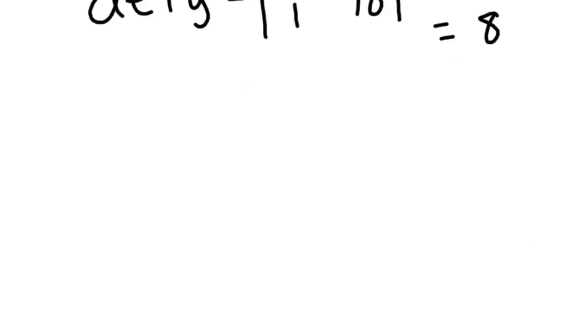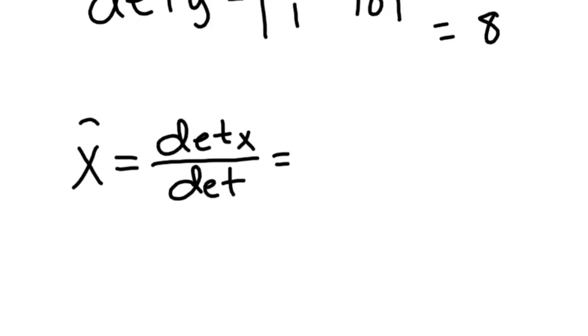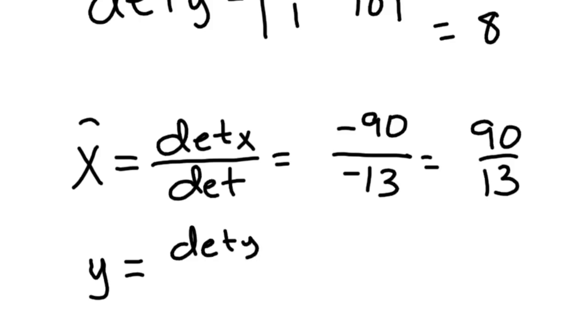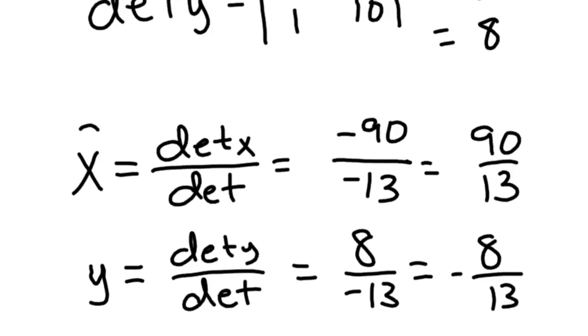So if we just go ahead and divide those, X would equal the determinant of X divided by the main determinant. So the determinant of X is negative 90, and the main determinant was negative 13. So 90 over 13 is your X value. Y value is the determinant of Y over the main determinant, and that was the 8 over negative 13. And so those are your two answers.